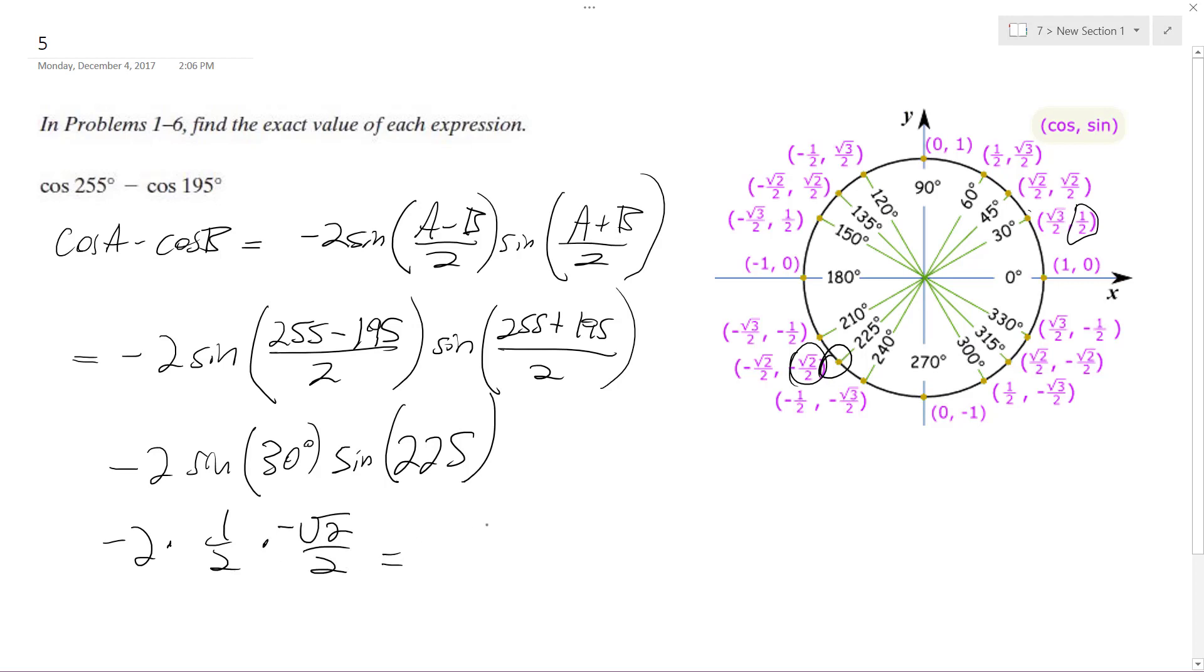And I end up with negative root 2 times negative root 2 over 4. And these cancel out, and the negatives cancel out, and I just end up with root 2 over 2. And that's it! All right, hope that helps. Thanks for watching.